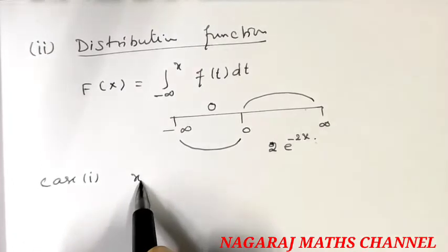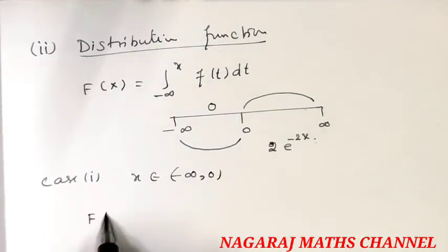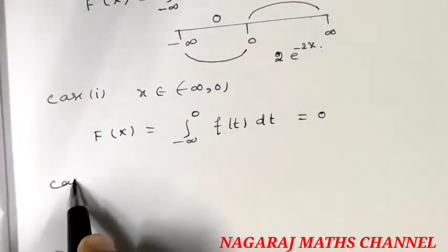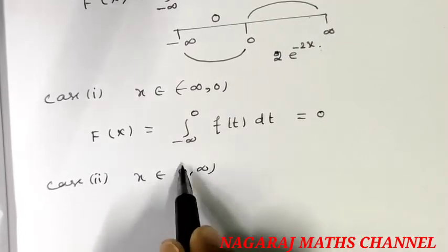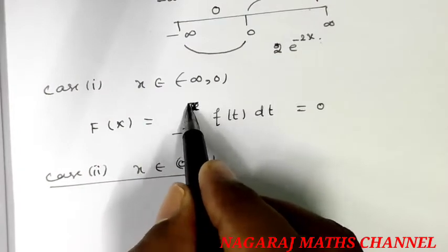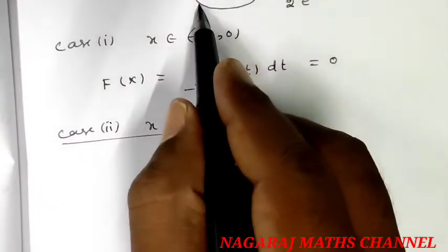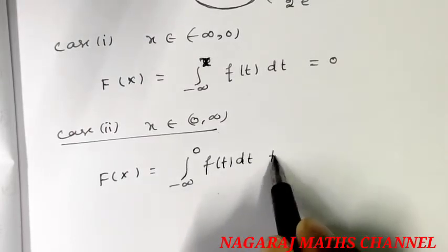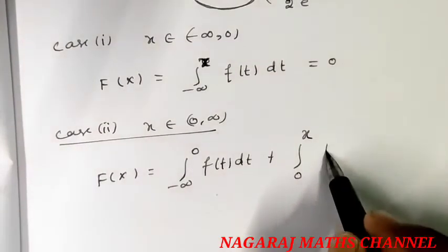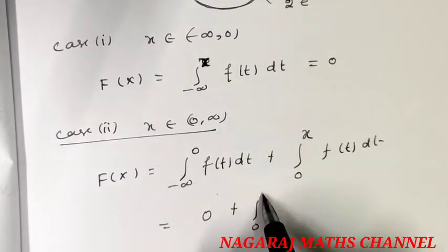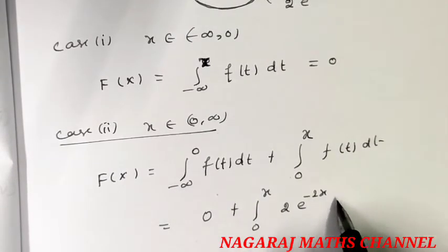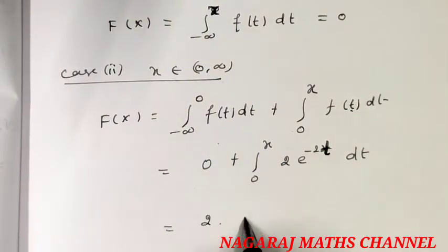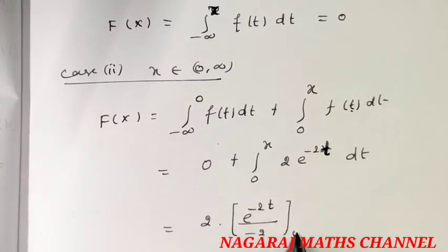Case 1: x belongs to minus infinity to 0. Capital F of x equals the integral from minus infinity to 0 of f of t dt, which equals 0. Case 2: x belongs to 0 to infinity. Capital F of x equals integral from minus infinity to 0 of f of t dt plus integral from 0 to x of f of t dt. This equals 0 plus integral from 0 to x of 2e to the power of minus 2t dt, giving 2e to the power of minus 2t divided by minus 2, evaluated from 0 to x.